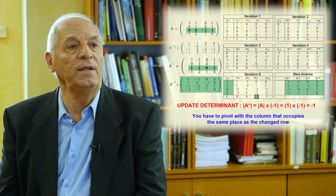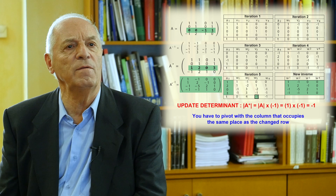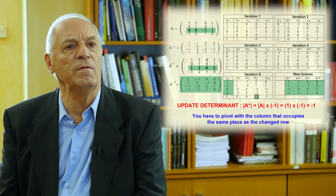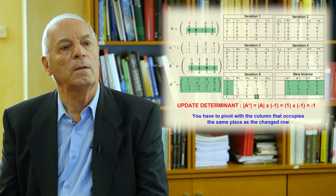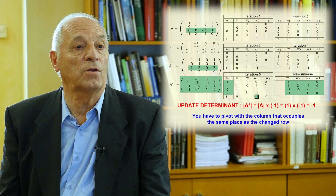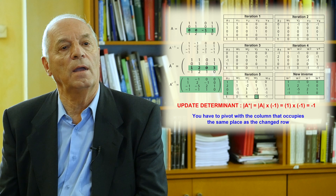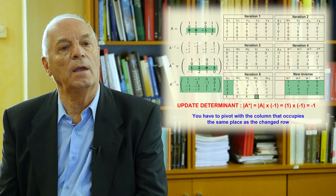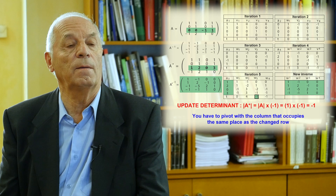Another interesting thing about this algorithm is that we can update inverses if we change the rows. Assume that we have inverted a 1,000 by 1,000 matrix and after very long work we discover that one of the rows is wrong. We don't need to start from scratch. We just introduce the new row, pivot one more time, and the final matrix is the updated matrix. The same can be done with the determinant: the previous determinant is multiplied by the pivot and we get the new determinant.